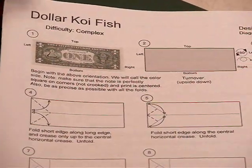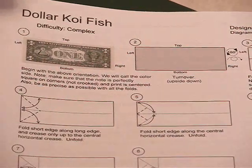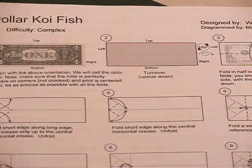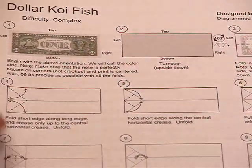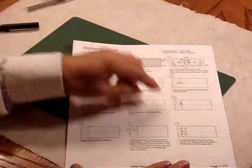Alright, now we have the dollar koi fish diagram here. We're going to fold the diagram just like it says. We're going to go through 1 all the way to 12.